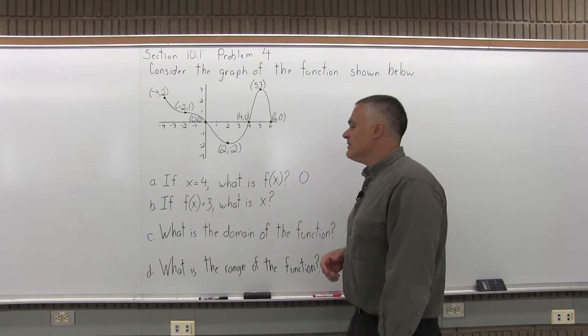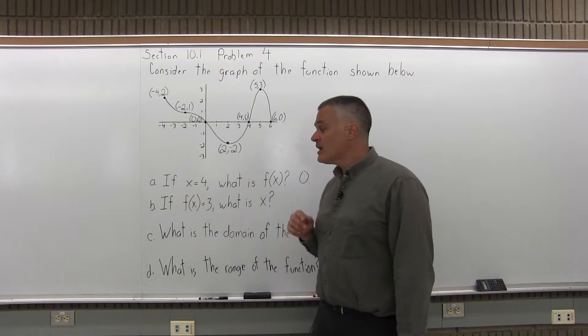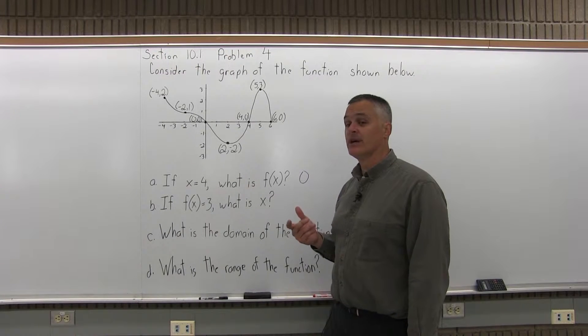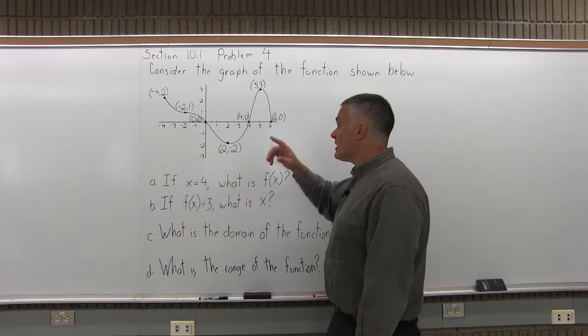Part B says, if f of x is 3, what is x? And again, you can change that question basically to, if y is 3, what is x? Because f of x and y are interchangeable. So as you look at the graph,